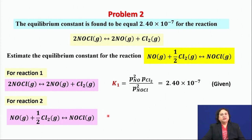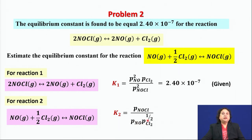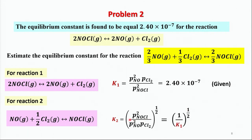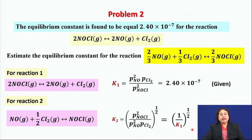For reaction 2, K₂ = p_NOCl / (p_NO × p_Cl₂^(1/2)). I can rewrite this as (p_NOCl² / (p_NO² × p_Cl₂))^(1/2), which by comparison with K₁ gives K₂ = 1 / K₁^(1/2). In other words, K₂ is the square root of the reciprocal of K₁.